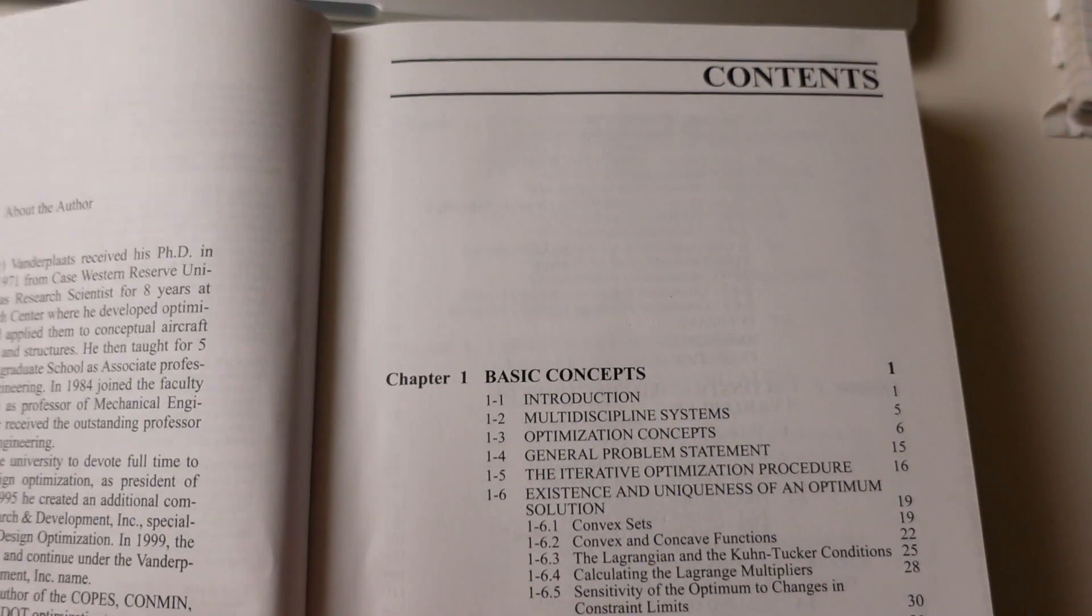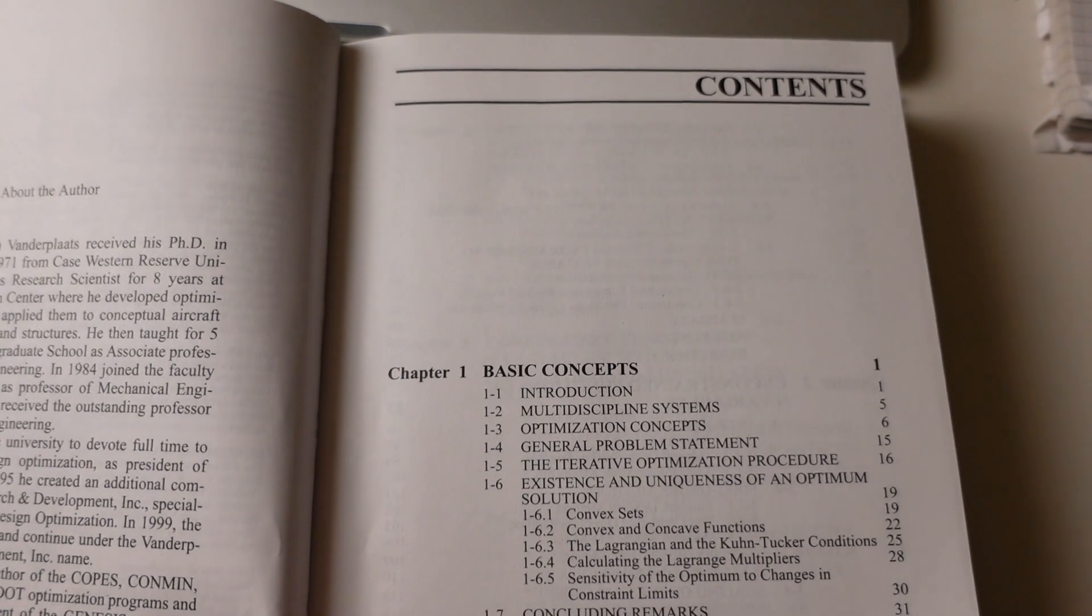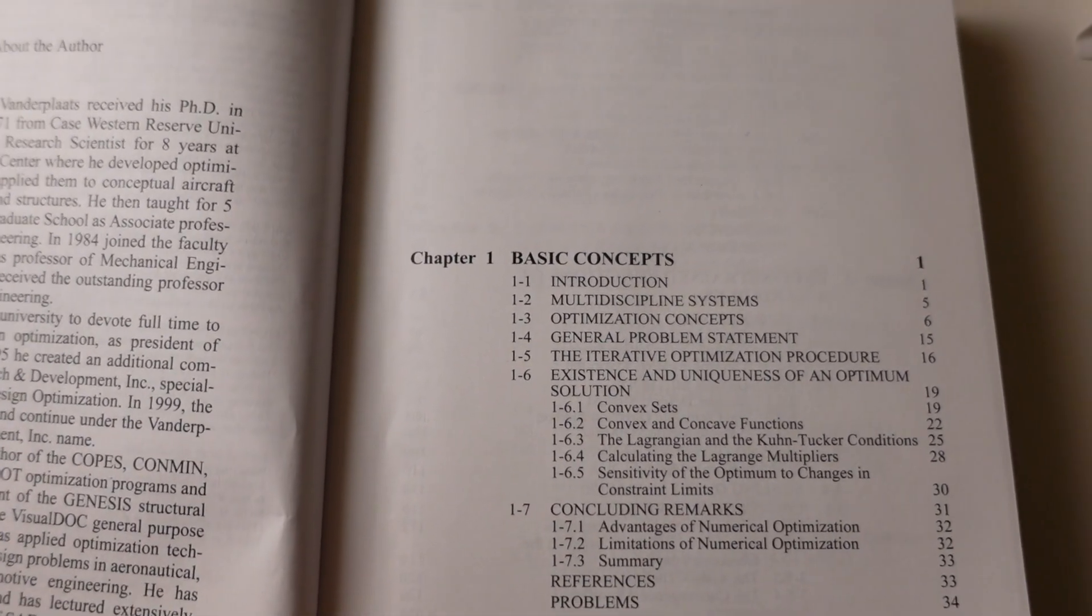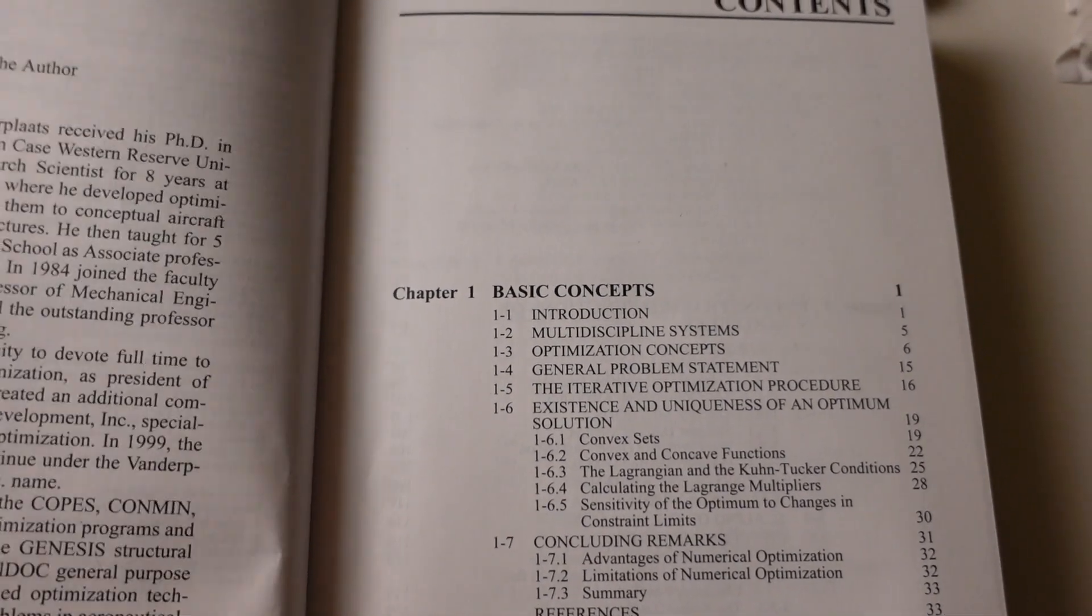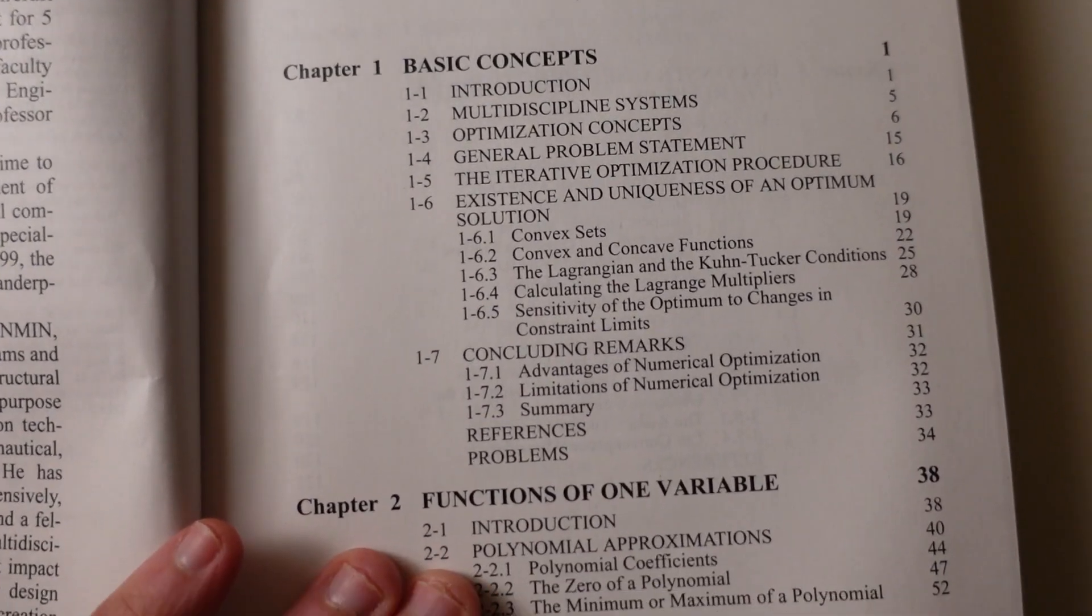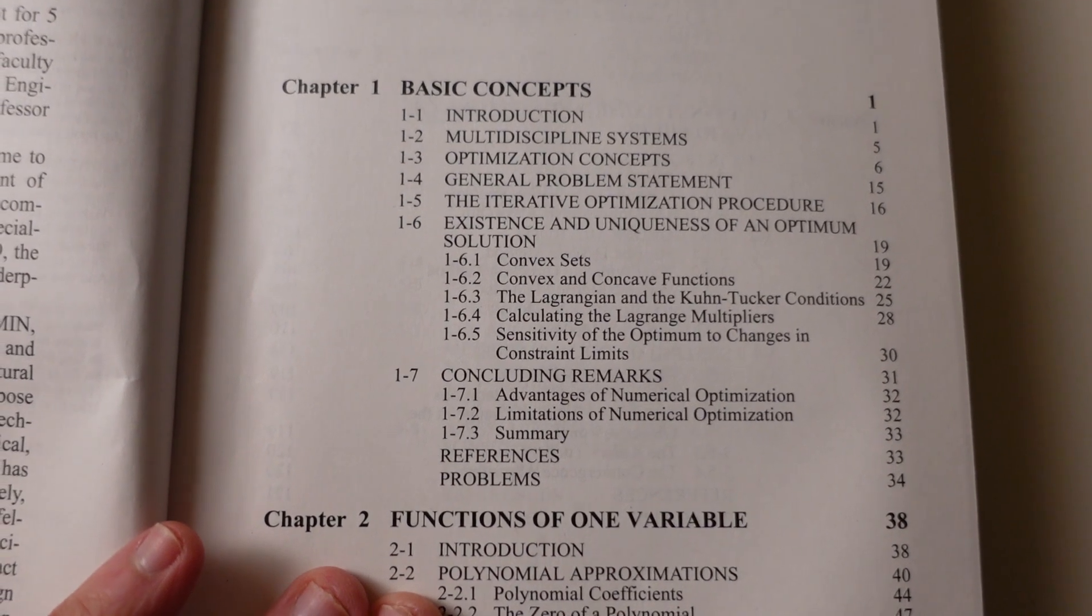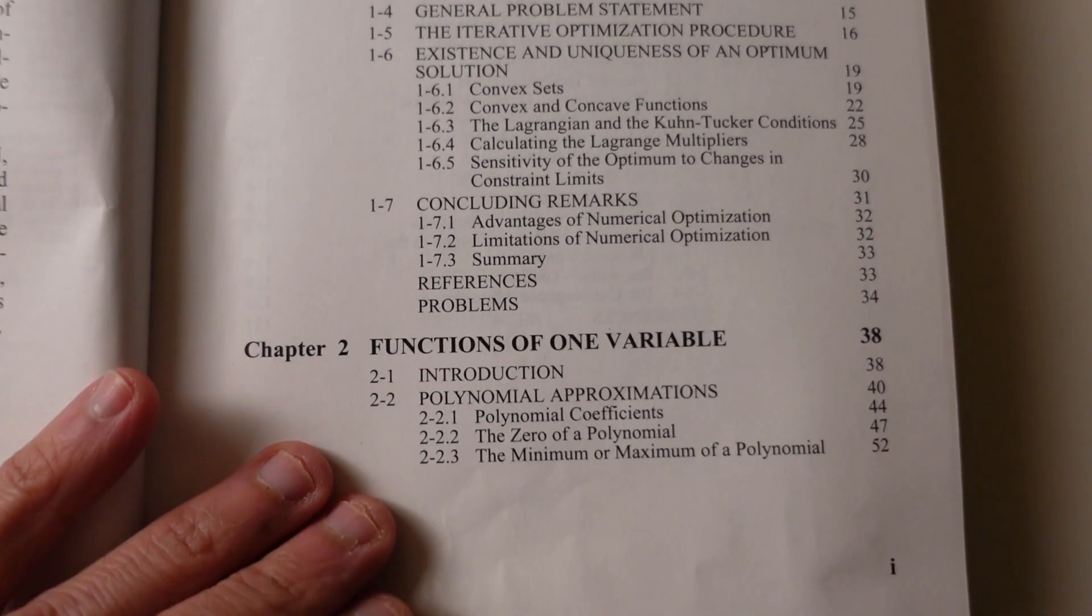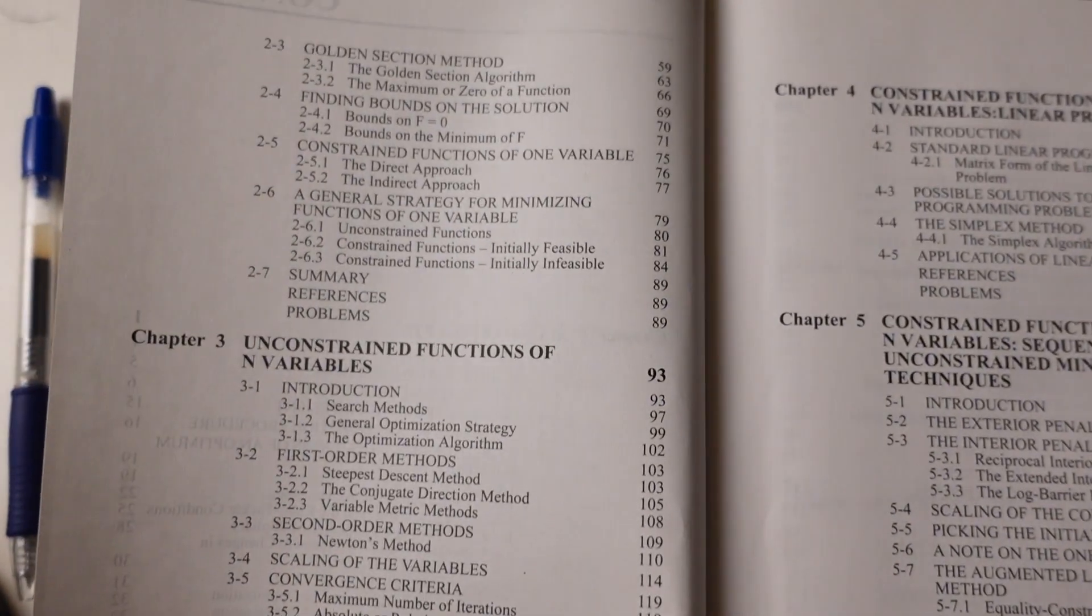So let's go quickly through the topics covered by this book. Chapter one introduces the optimization concepts, then it talks about uniqueness of an optimum, convex sets, convex and concave functions, Lagrange multipliers, and the Kuhn-Tucker conditions. Then he goes on with functions of one variable and introduces important numerical methods.